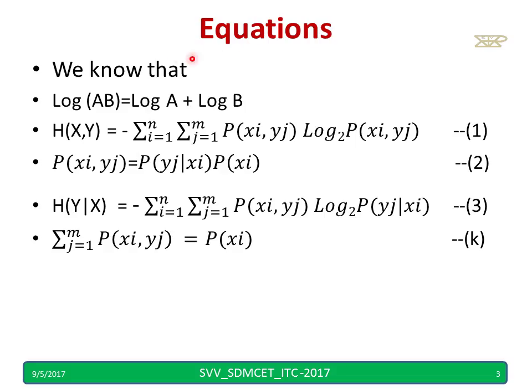To do the derivation, these are the equations we should know. It is like a prerequisite. Log(AB) = Log A + Log B. And it is a joint entropy equation. And probability of (xi, yj) is probability of yj given xi times probability of xi.